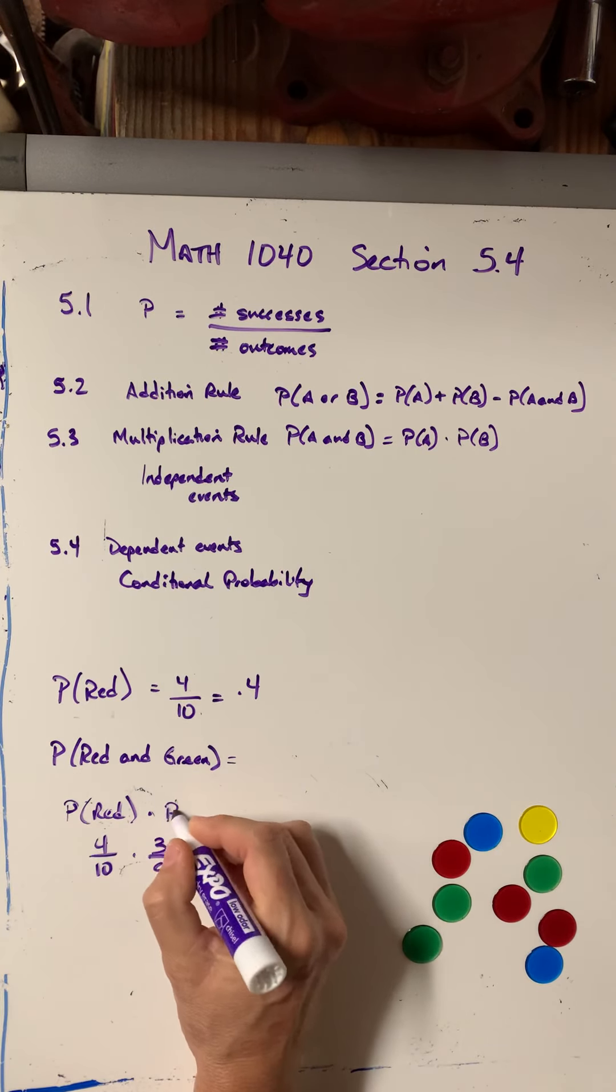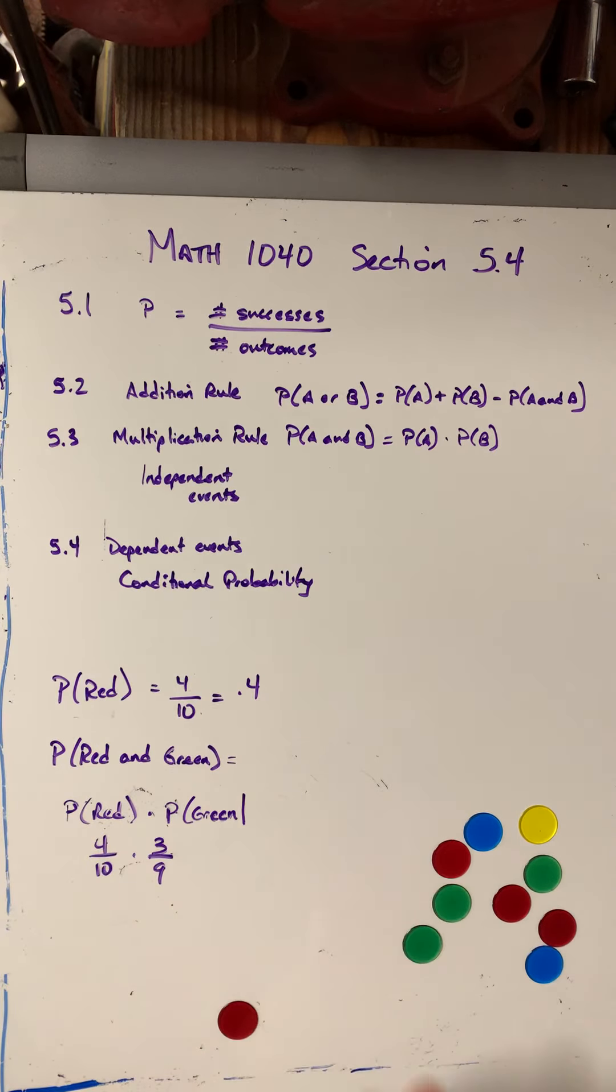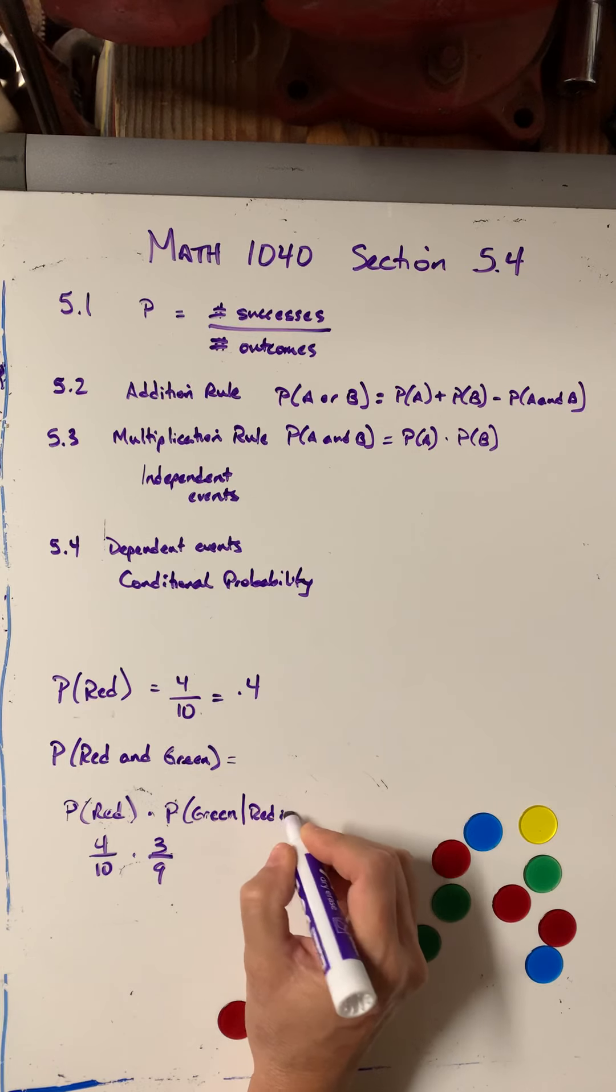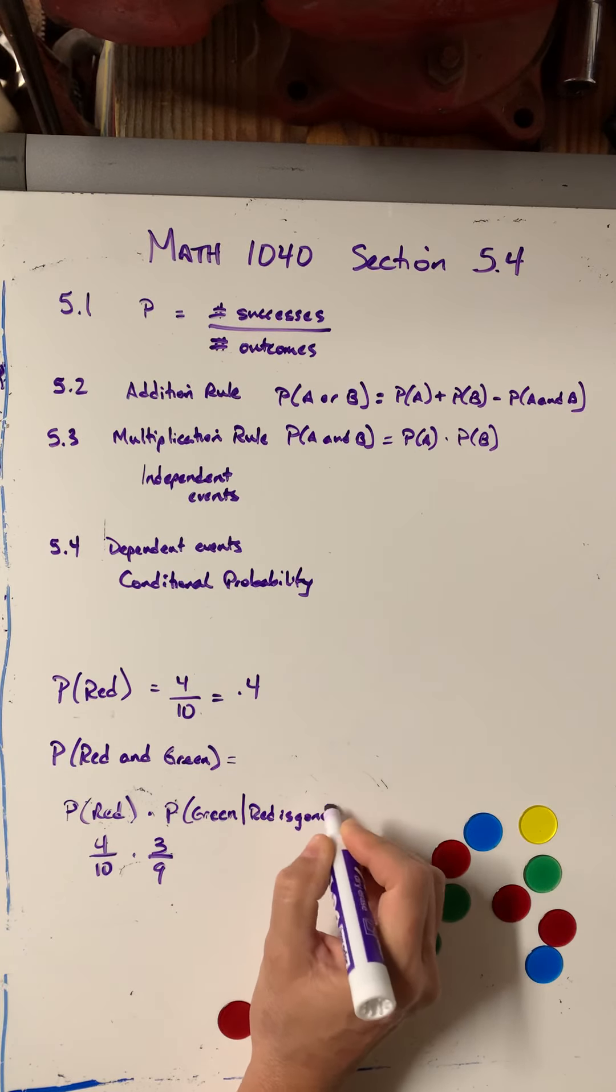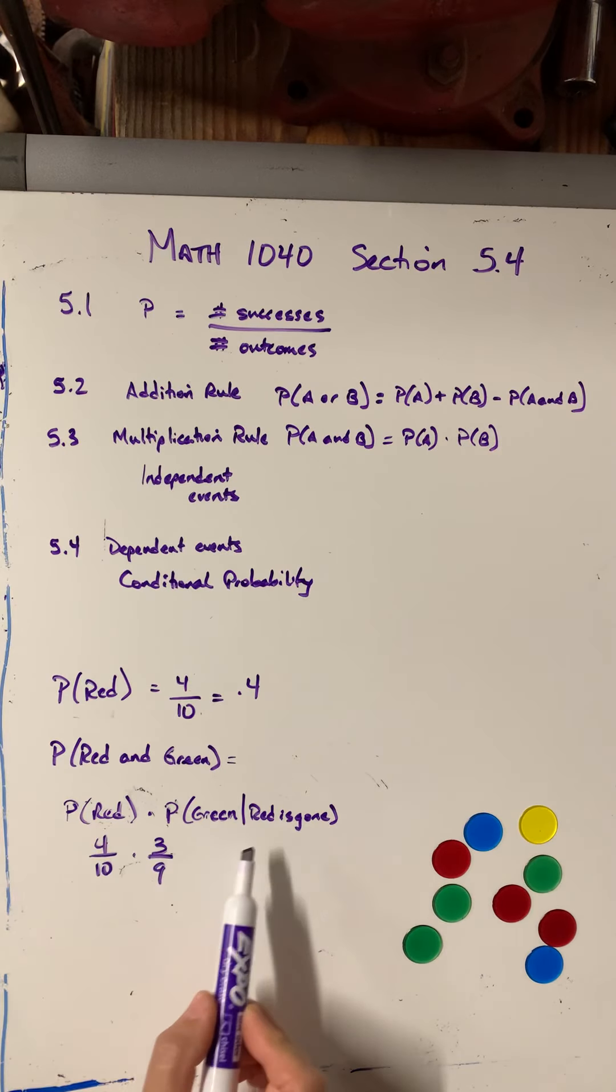And we call this conditional probability. So what happens is that my second event is the probability of getting a green given, and that line means given, a red is gone. So this is what we call conditional probability. Notice it changes the formula.